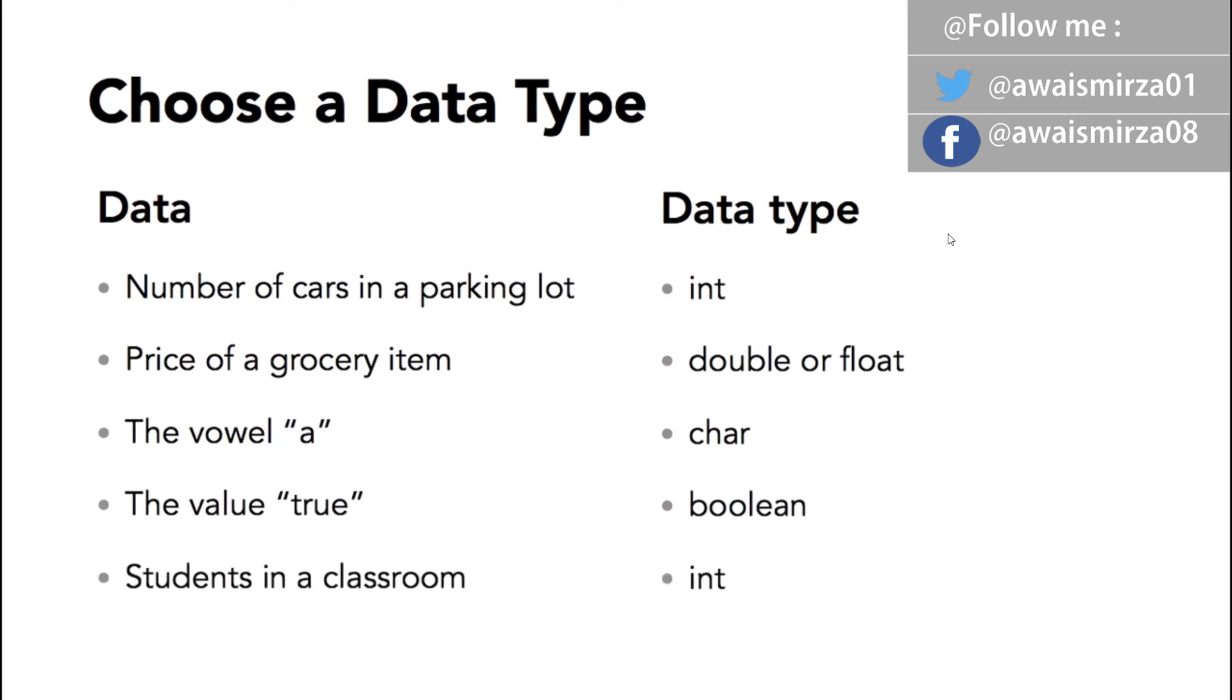The vowel 'a'? We use the data type character or char. The value true is boolean. And the number of students in the classroom would be an integer. Again, you can't have half of a student.